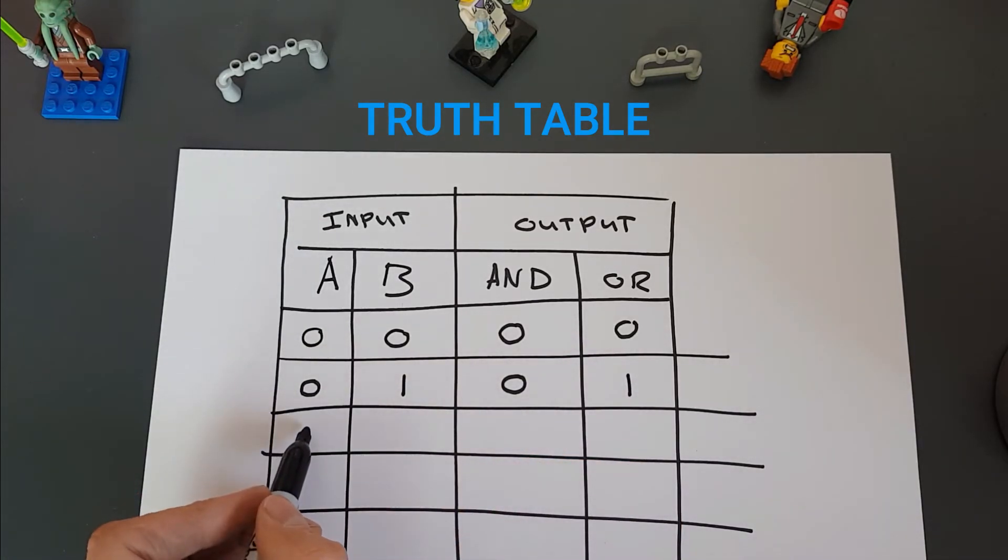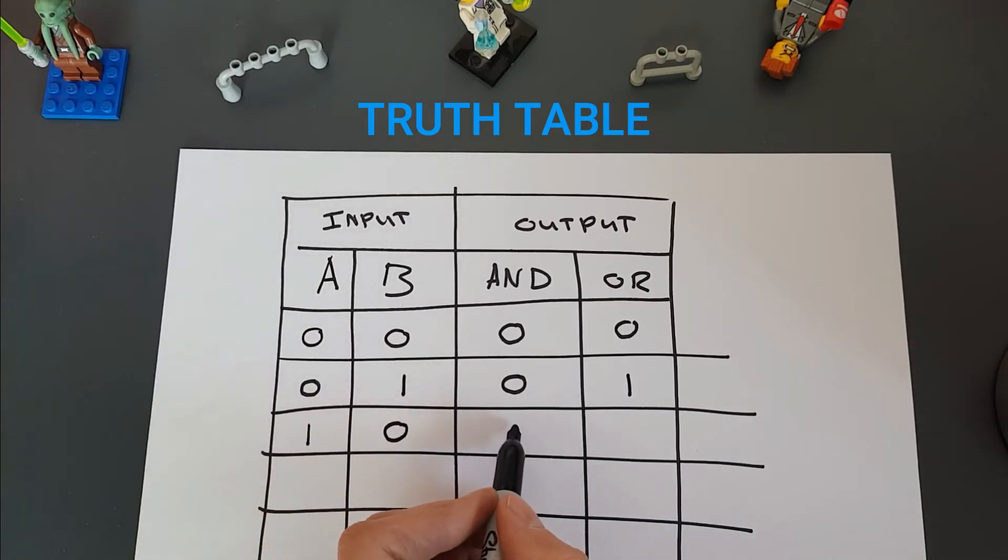So next one, let's have a look. We'll go A is TRUE, B is FALSE. The AND will also then give FALSE, but OR will give us a TRUE. Now we'll go the last one, both TRUE. TRUE and TRUE, AND will be TRUE, and OR will also be TRUE because it doesn't matter if A or B or both are TRUE for output OR to be TRUE.